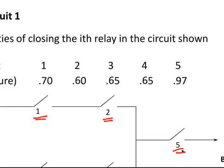The probability of each circuit working or being closed is as follows. For example, the probability that circuit 1 is closed and allowing current to flow through it is 0.70. Likewise, the probability that circuit 2 is closed and allowing current through is 0.60 and so on. Now, let's look at this.